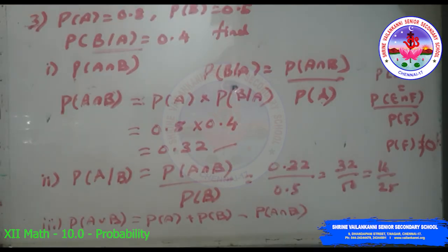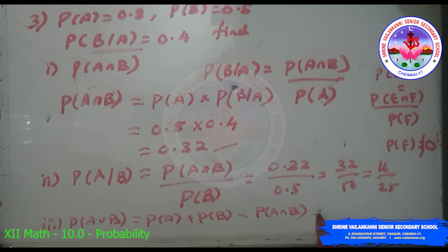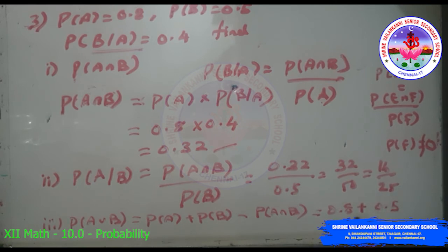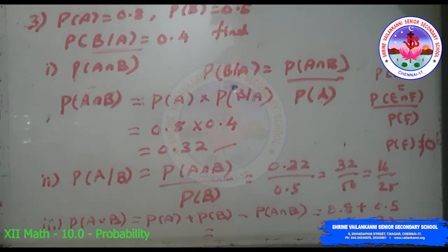Third subdivision: find P(A∪B). P(A∪B) = P(A) + P(B) − P(A∩B) = 0.8 + 0.5 − 0.32 = 1.3 − 0.32 = 0.98.